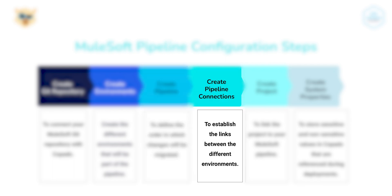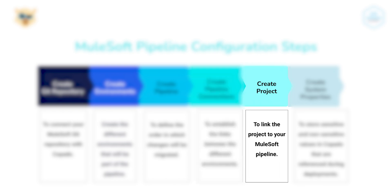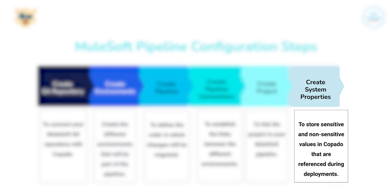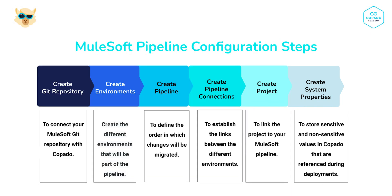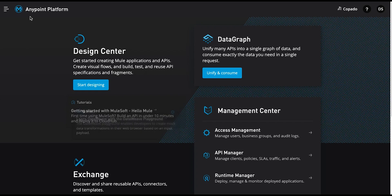Next, create pipeline connections to establish the links between the different environments. After that, create the project record and link your MuleSoft pipeline to it. Finally, create environment system properties and pipeline system properties to store sensitive and non-sensitive values in Capato. Alright, let's now go through these steps.